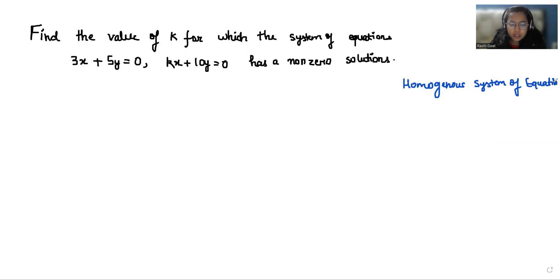In homogeneous system of equations, the equations are in the form of a1x plus b1y equals 0 and a2x plus b2y equals 0. If the solution has zero solution, then x equals 0 and y equals 0, or a1 by a2 not equals to b1 by b2.